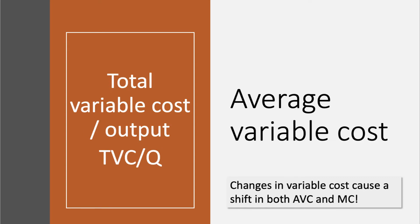Average Variable Cost, or AVC, is Total Variable Cost divided by Output — TVC divided by Q. A key point here is that if there's a change in Variable Cost, for example the price of raw materials or labour costs, that causes a shift both in AVC and also in Marginal Cost.